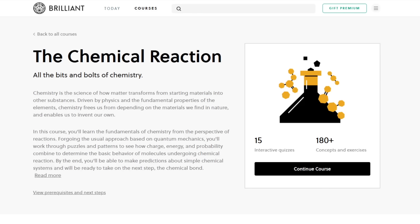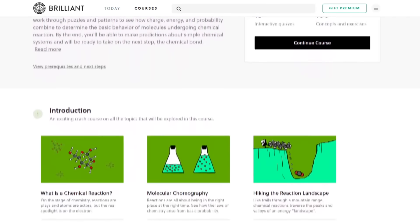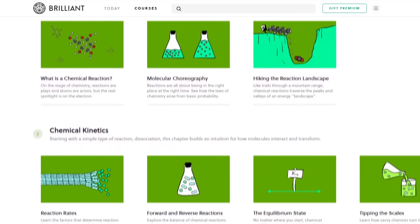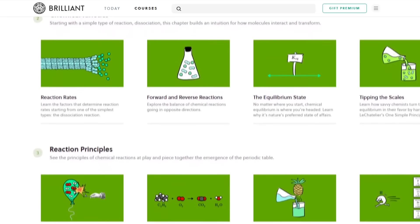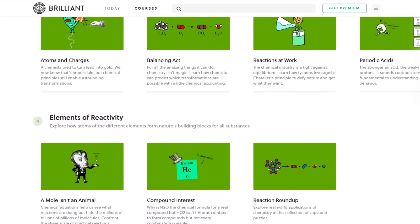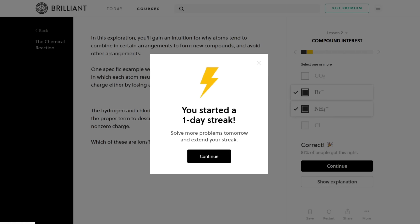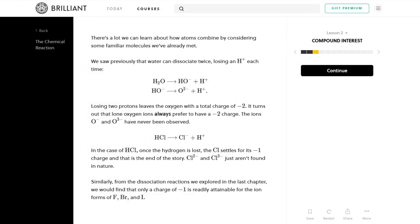In the meantime, if you want to learn about how atoms which form the molecules that take part in the rich landscape of chemical reactions, you will love a course called The Chemical Reaction, available on Brilliant, today's sponsor. In this course you will learn the fundamentals of chemistry from the perspective of chemical reactions. It is a fun way to learn because you solve puzzles and patterns to see how charge, energy, and probability combine to determine the behavior of molecular reactions. It is different than the usual quantum mechanical approach, and you will end up learning and retaining more information because of the interactive aspects of this course.